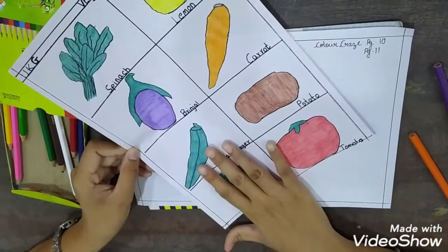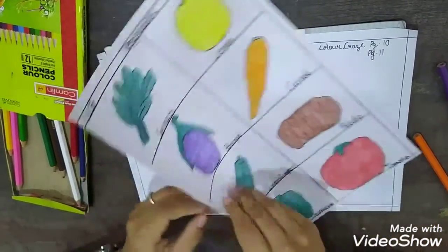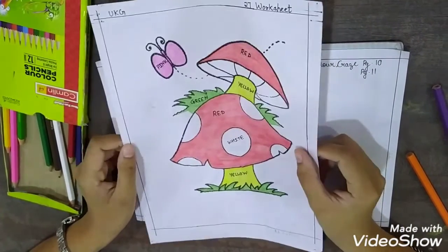So in that, there is one worksheet we have given to color. The vegetables one. Okay. And this one. Mushroom one. So please color that worksheet also.